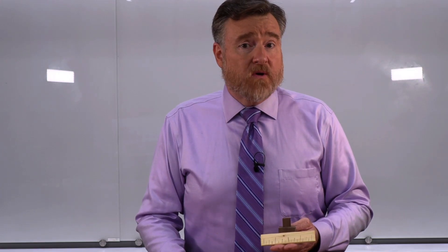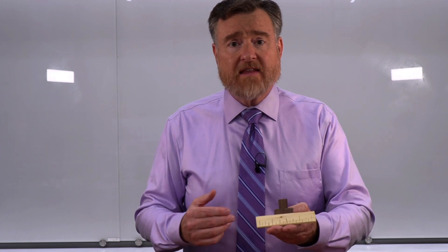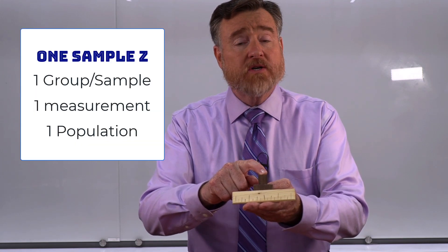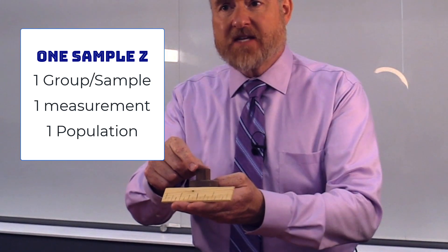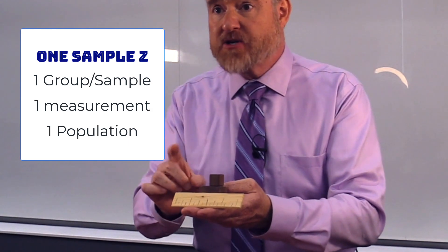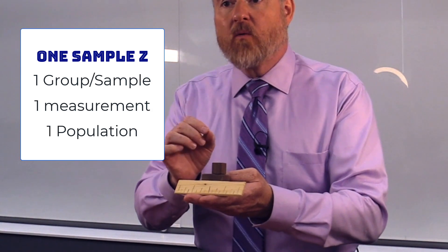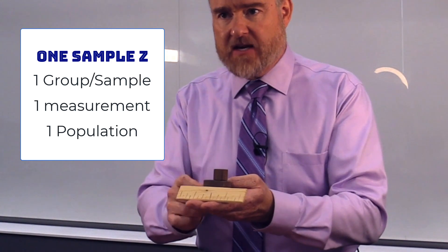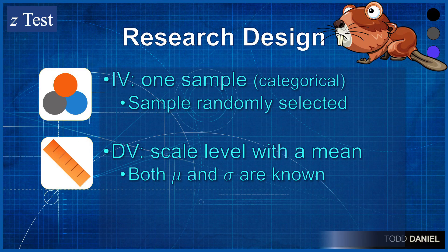The research design for a one-sample z-test works like this. We have a sample which is drawn from a population. This sample is one group — it's categorical. We also have a measurement of the population which tells us the mean and the standard deviation. The independent variable is that one sample, which has been randomly selected from the population. The dependent variable is scale level, and both the mean and population standard deviation are known.